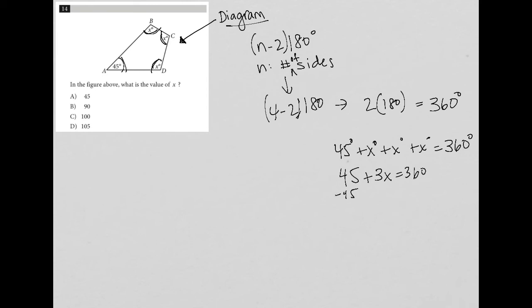Subtract 45 from both sides of the equation, and I'm left with 3X equals 315. Then when I divide both sides by three, I'm left with X equals 105 degrees.